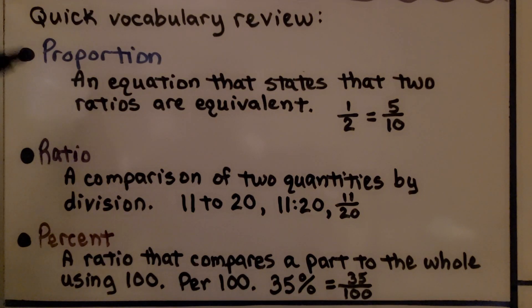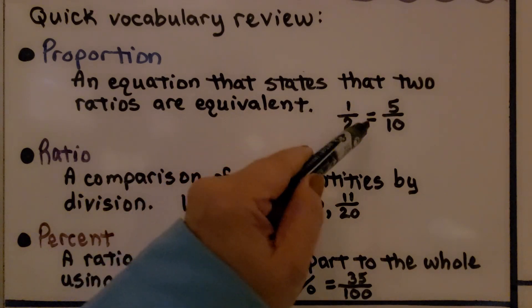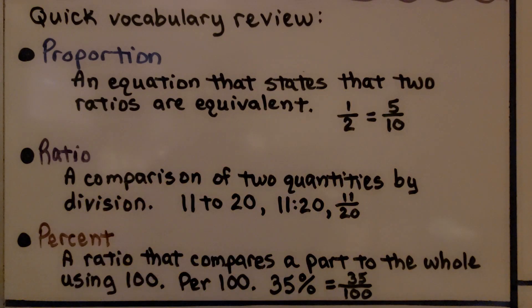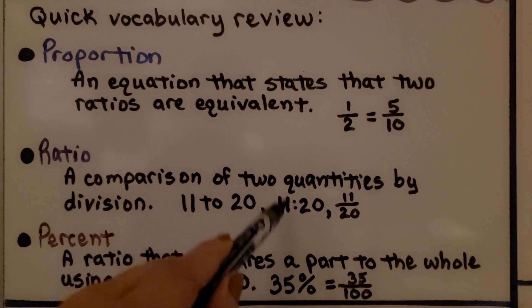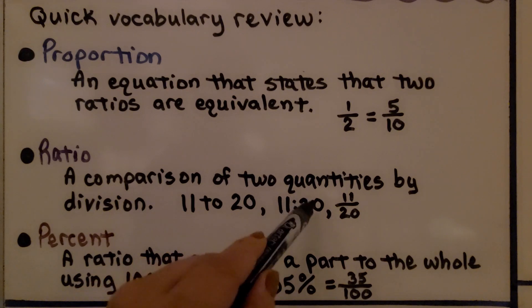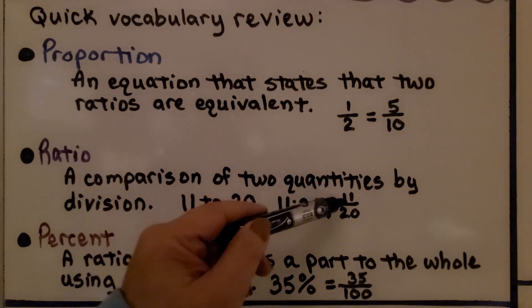Proportion, that's an equation that states that two ratios are equivalent, like 1 half is equal to 5 tenths. They're in proportion to each other. A ratio, that's a comparison of two quantities by division. If we have 11 to 20, we can write it with this colon as 11 to 20 and 11 twentieths. It would be 11 divided by 20.